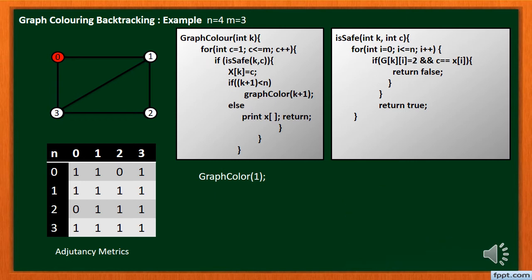Then check for graph color 1, that is node 1. Here K equals 1 and let's take C equals 1, that is red color. Then pass K equals 1 and C equals 1 to ISSAFE method to check whether C equals 1 is safe for node 1 or not. In ISSAFE method set I equals 0, then check G of 1, 0 equals 1 or not, and also check if the given color is present in the given node's adjacency matrix or not.